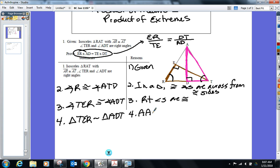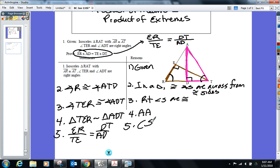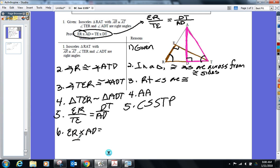Now apply what we did yesterday. If the triangles are similar, the sides are in proportion. So ER over TE is equal to DT over AD. Why was that statement true? Corresponding sides of similar triangles are proportional. And now cross multiply, product of the means equals product the extremes.